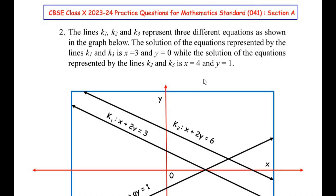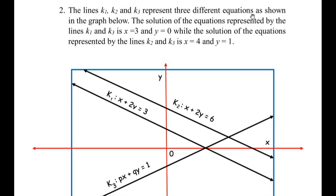This question belongs to the pair of linear equations in two variables. The lines k1, k2, and k3 represent three different equations as shown in the graph. Each line is assigned a particular equation. The solution of the equations represented by lines k1 and k3 is x=3 and y=0, while the solution of k2 and k3 is x=4 and y=1.